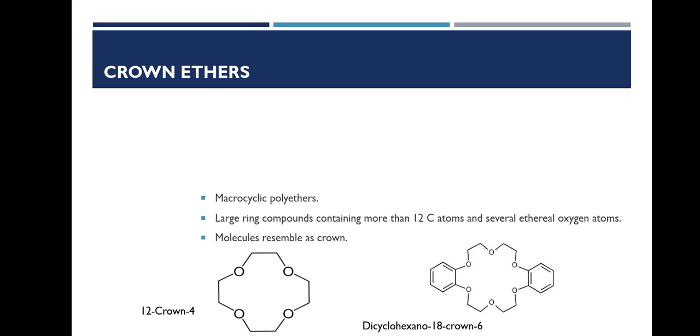Some examples of crown ethers are given below. First, 12-crown-4 and dicyclohexano-18-crown-6. Here, the first number in the name indicates the total number of atoms in the ring, and the second number indicates the number of oxygen atoms.